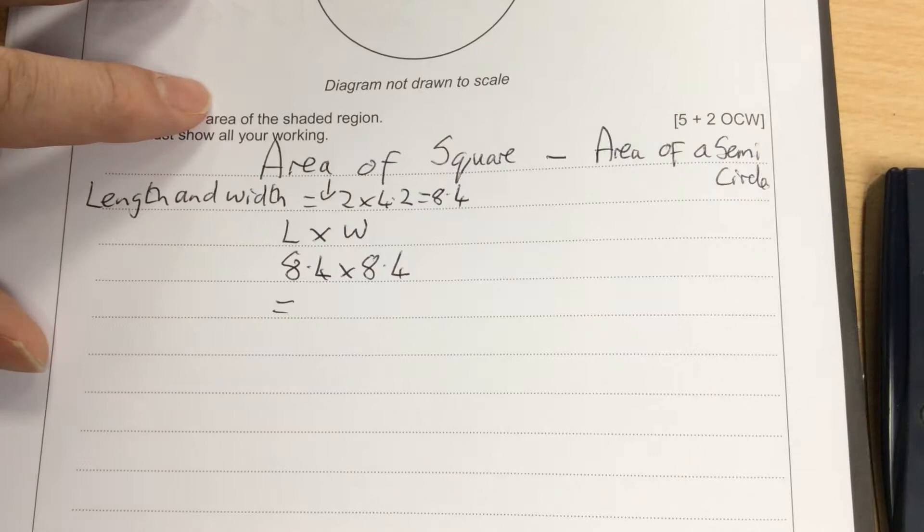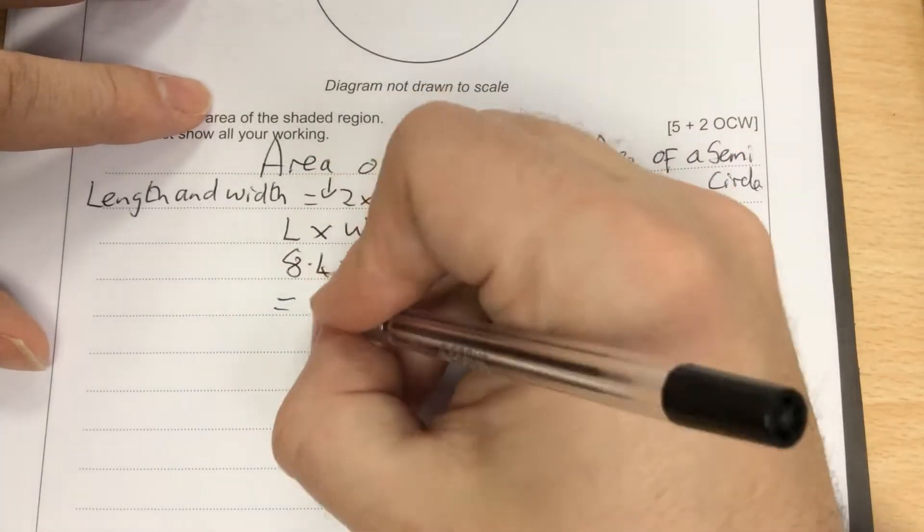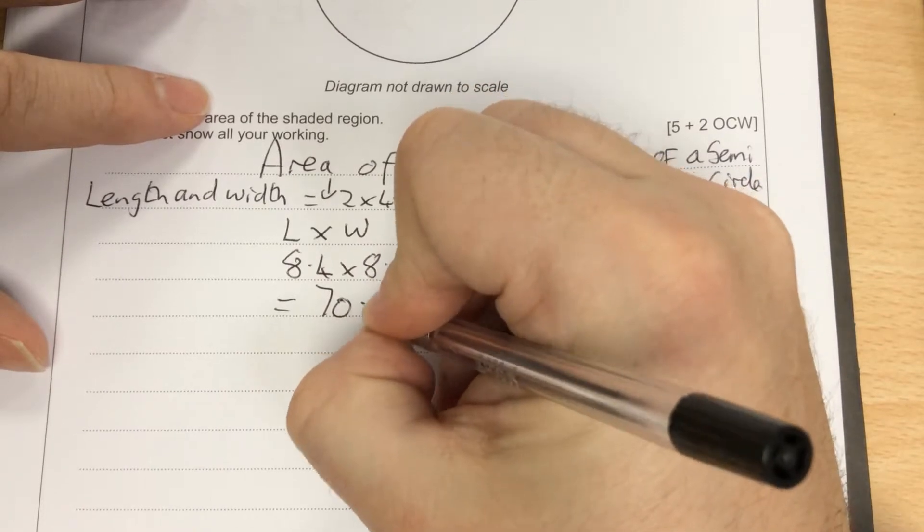So the area of the square would be 8.4 times 8.4, and 8.4 times 8.4 is equal to 70.56.